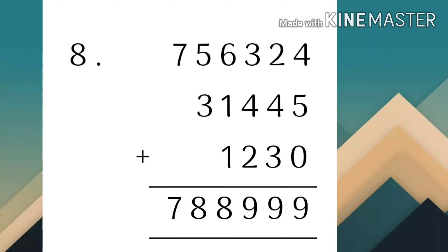9 plus 0 = 9; 2 plus 4 = 6; 6 plus 3 = 9; 3 plus 4 = 7; 7 plus 2 = 9; 6 plus 1 = 7; 7 plus 1 = 8; 5 plus 3 = 8; और 7 को हमने as it is लिख दिया। ये question solve हो गया।